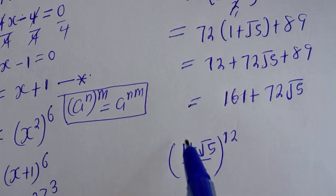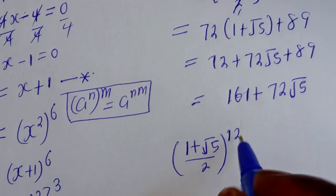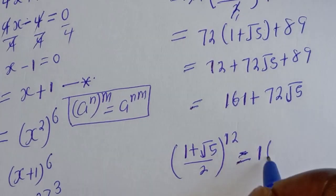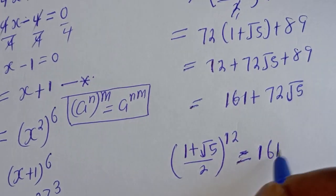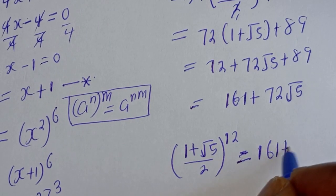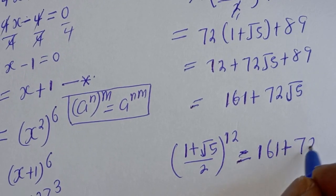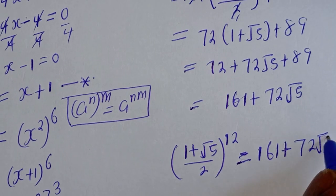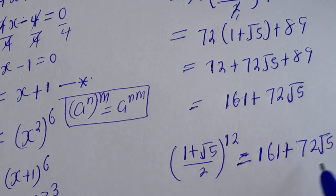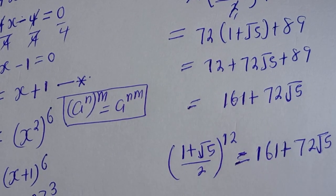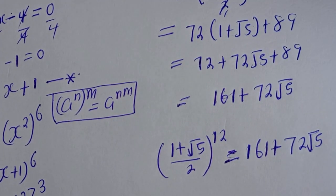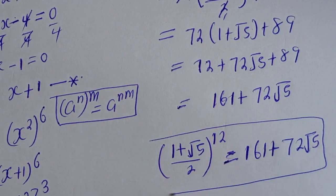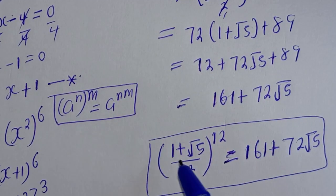Therefore, (1 plus square root of 5) over 2 to the power of 12 is equal to 161 plus 72 root 5. This is the final answer. Thank you for watching. Don't forget to like, share, comment, and subscribe.